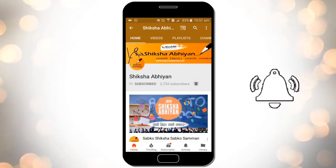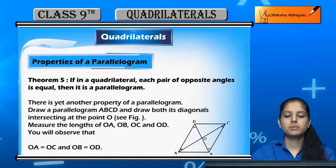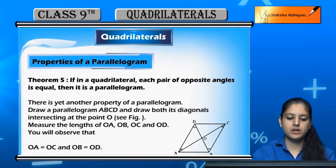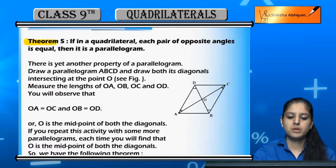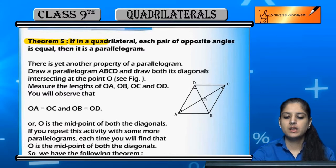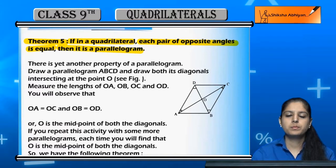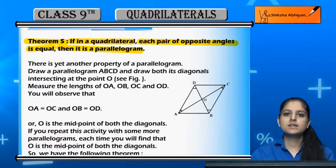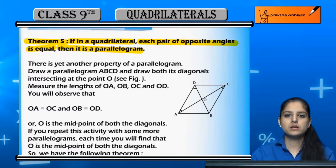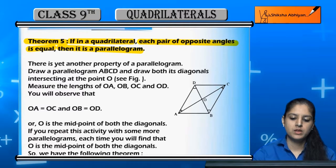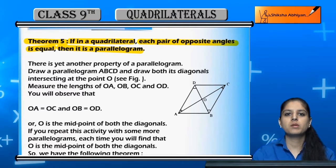Next property of a parallelogram we will discuss is Theorem 5: If in a quadrilateral each pair of opposite angles is equal, then it is a parallelogram. Agar ek quadrilateral ke andar opposite angles ke dono pair equal hai, to wo quadrilateral ek parallelogram hota hai. Previously in Theorem 4 we saw that in a parallelogram opposite angles are equal. Now we will prove the converse.